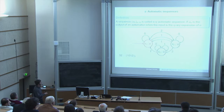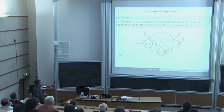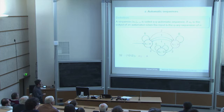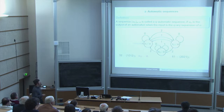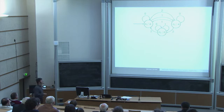So if the first digit is one, you go to the next state via the arrow labeled one; the next digit is zero, so you follow the next arrow and stay; and so on. When the input sequence ends, you are at a final state, and the automaton outputs, say, 'a'. You can do this for any number, and finally you get an automatic sequence.